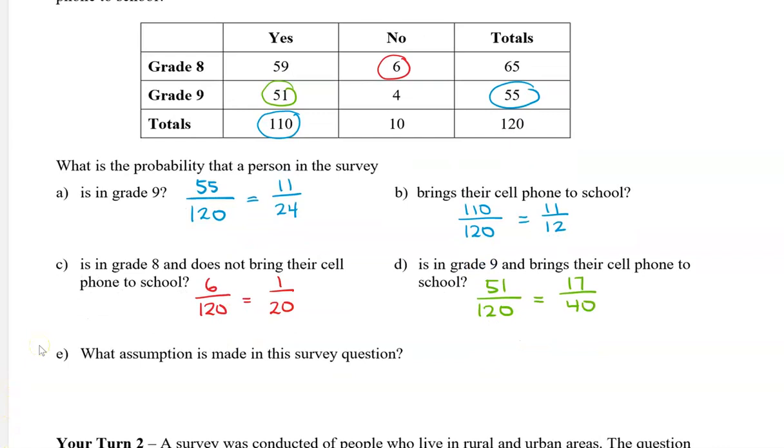The last question is not a numerical question, but what assumption is made in this survey question? When you're asking the question to the students about whether they're bringing their cell phone or not, we're going to assume that they have a cell phone so that they can respond yes or no. So assume the students all have a phone.